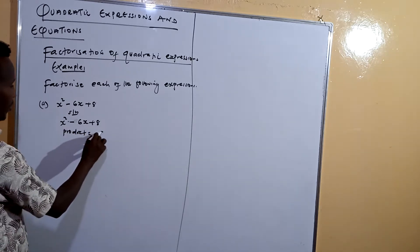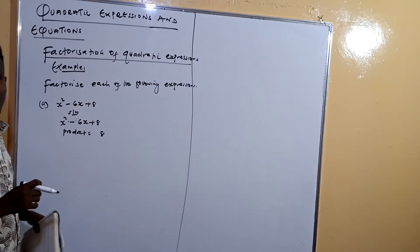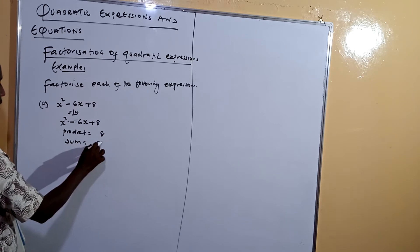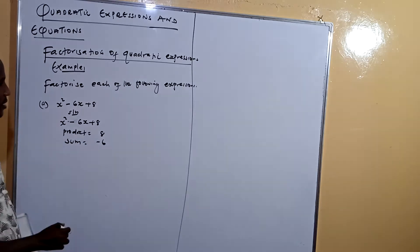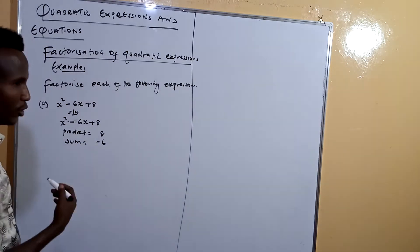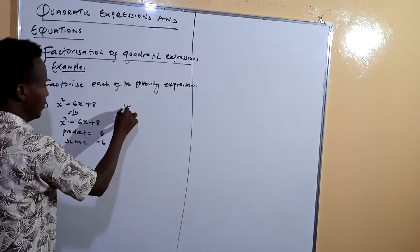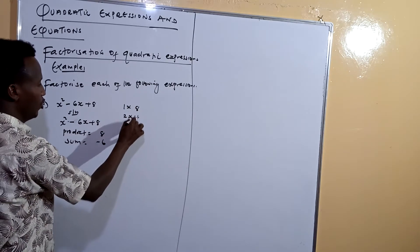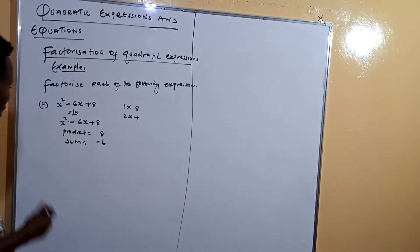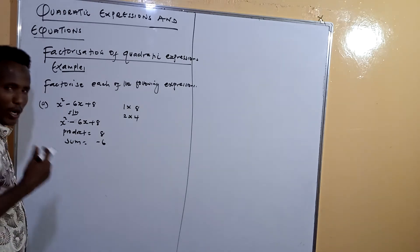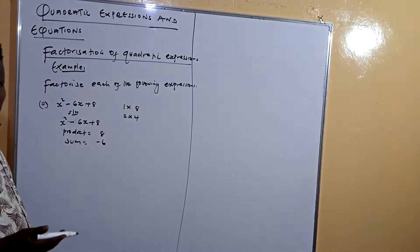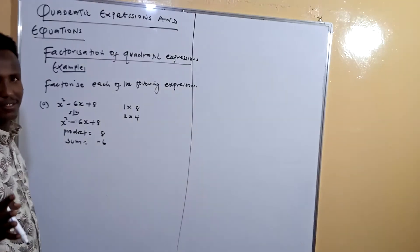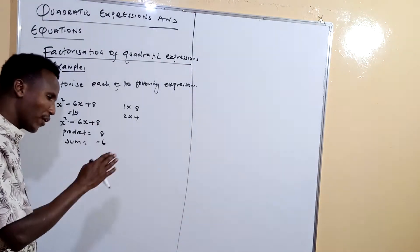Remember in Form 2, the product is a times c. Here, a is the coefficient of x squared, which is 1, so the product is 1 times 8 equals 8. Our sum is negative 6. Now let's find two numbers that multiply to give 8 — we know 1 times 8 is 8, and 2 times 4 is also 8.